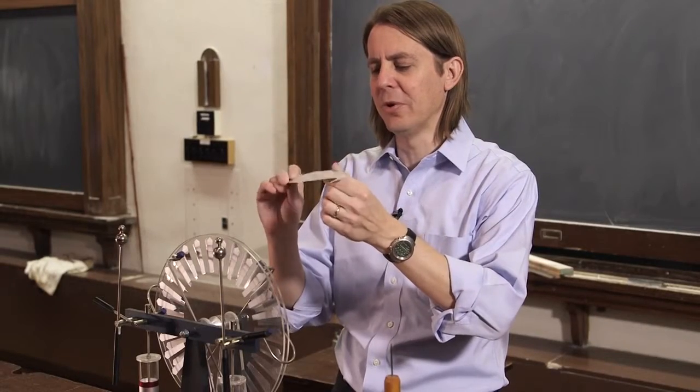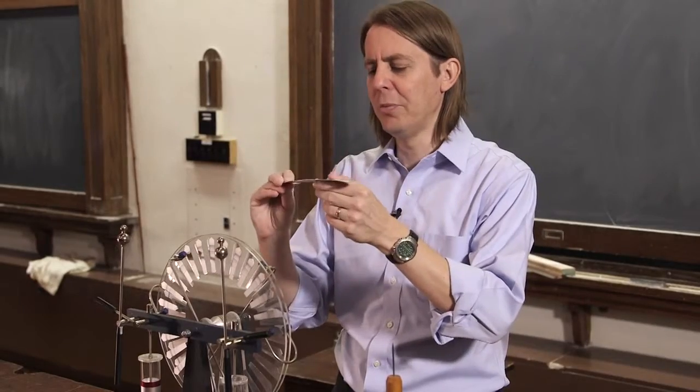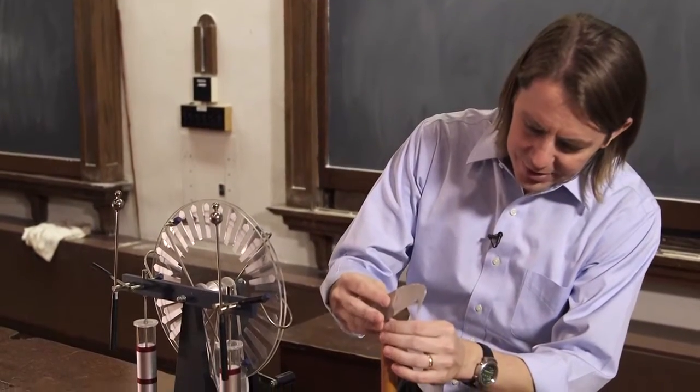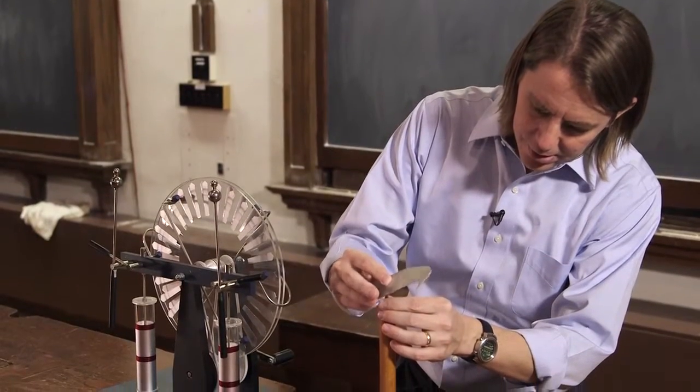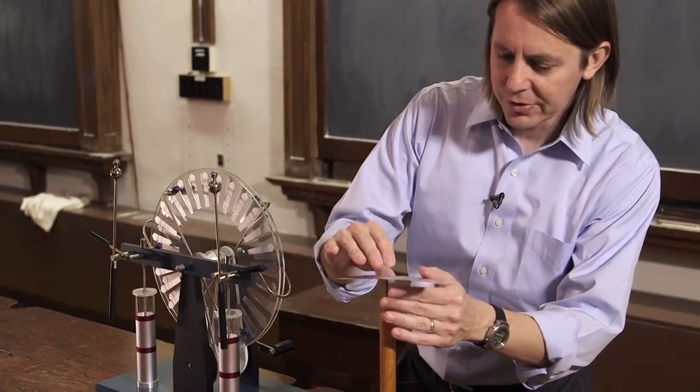It's a little electrostatic demo where you cut a piece of aluminum in this shape, very important, and you put it on a nail where it just barely balances like that. So now it can rotate very easily.